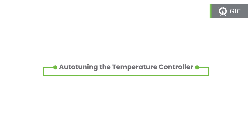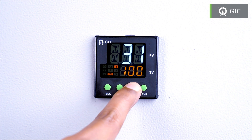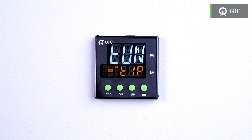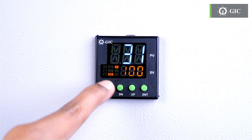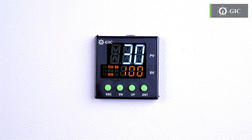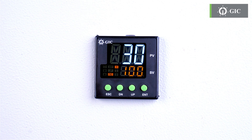You can also auto-tune the product — it helps the controller understand the environment better. Long press the up key for 2 seconds. Then press the up key twice to select tune at first power. Press enter to save, then press ESC to return to the main screen and power cycle the product. After power cycling, a simple display tells you that the auto-tune process is in progress. You'll see the A and T indication blinking until it's complete.